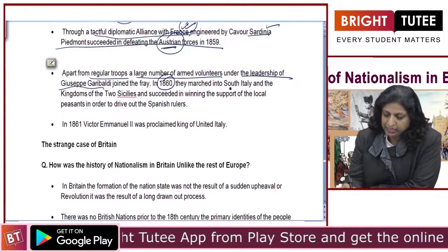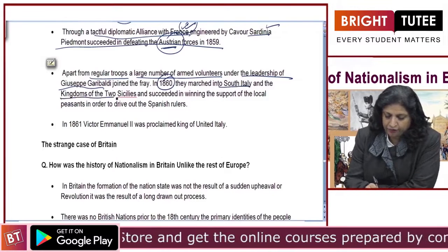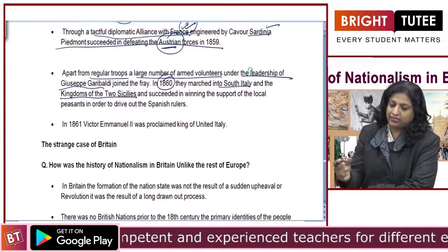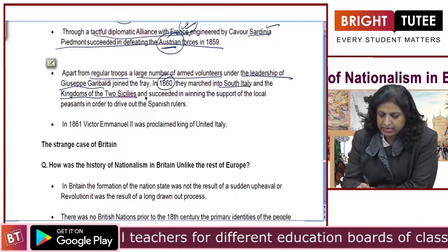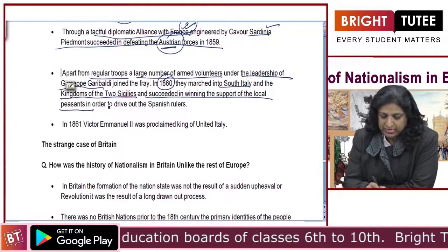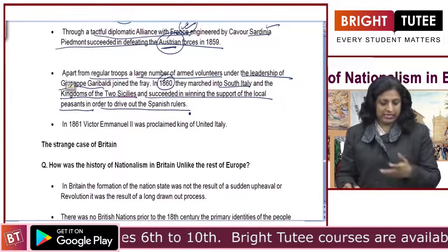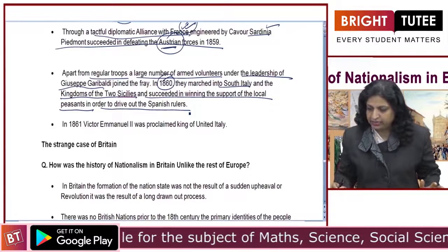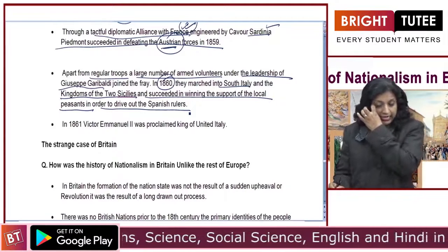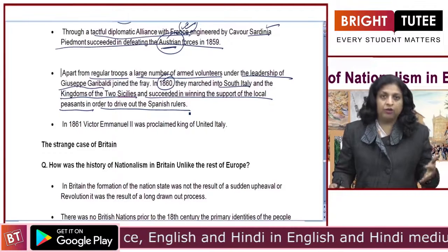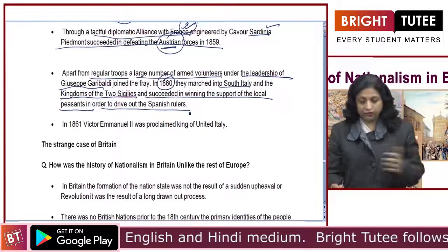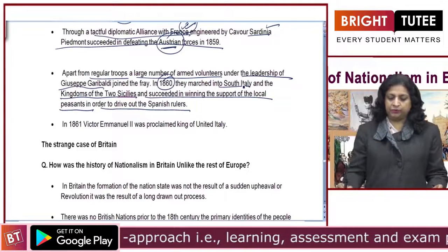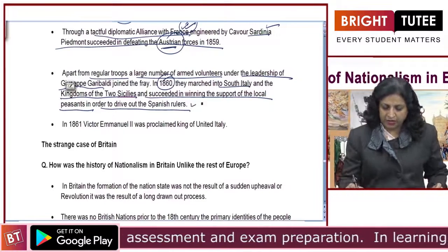In 1860, they marched into South Italy and the Kingdom of Two Sicilies. One by one, they were trying to unite and join these different parts of Italy. They succeeded in winning the support of local peasants in order to drive out the Spanish rulers. Italy was politically fragmented and scattered over several dynasties, and one by one, different dynasties were being brought under the unification. South Italy and the Kingdom of Two Sicilies succeeded in winning the support of local peasants and drove out the Spanish rulers.